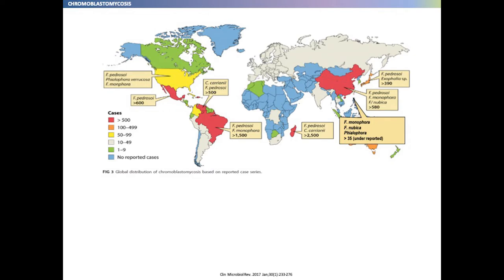This is a global epidemiology map of the pathogens of chromoblastomycosis. In the Asia area, the main pathogen, as I mentioned, is Fonsecaea, including Fonsecaea monophora, F. pedrosoi, and F. nubica. As you can see, Vietnam is shown in blue, meaning no formal case report. But I'm curious — is anybody here who has ever seen or treated a patient with this skin presentation or a confirmed diagnosis of chromoblastomycosis? So I think Vietnam should not be in blue. Please describe and publish the case to help us fill this blank, because Vietnam is an agricultural country and there must be many cases like this.